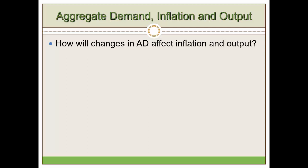We are not actually looking at how the aggregate supply curve shape changes or is determined. Instead, we are answering this question: how will changes in AD affect inflation and output? To answer this question, we should really look at the shape of the aggregate supply curve — the SRAS, which stands for short-run aggregate supply curve.